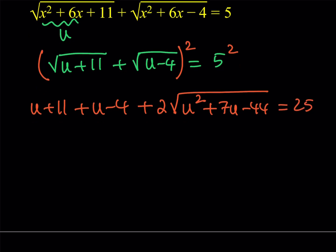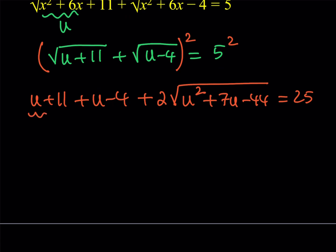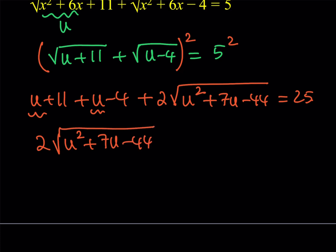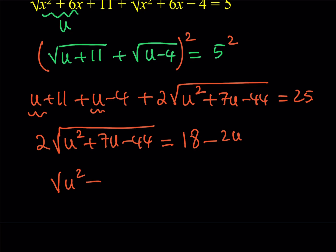Now we can simplify a little bit. Notice that I can add the constant terms: 11 minus 4 gives 7. I subtract the 7 from 25, which gives 18, and also subtract 2u. To keep a long story short, I subtract everything besides the radical from 25, giving me 18 minus 2u under the radical. At this point, divide both sides by 2 to make it easier — you don't want to deal with large numbers.